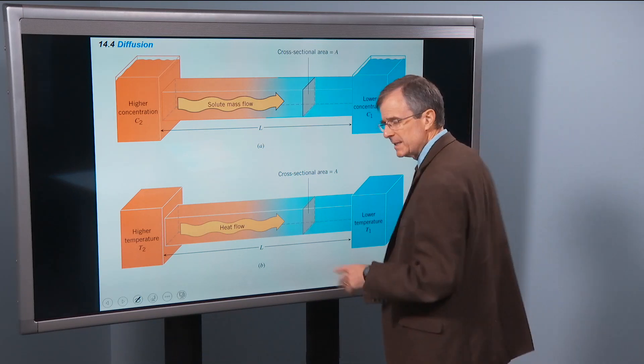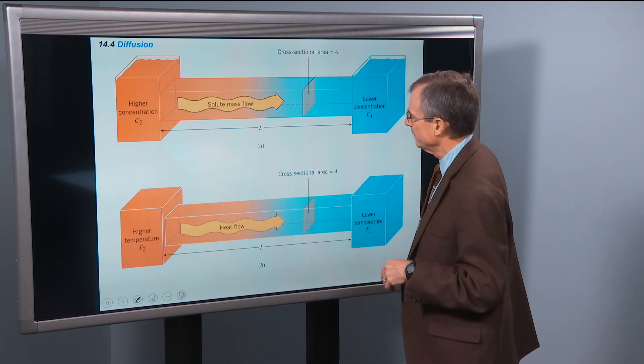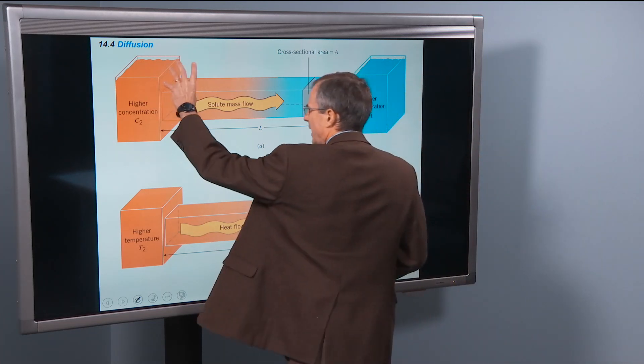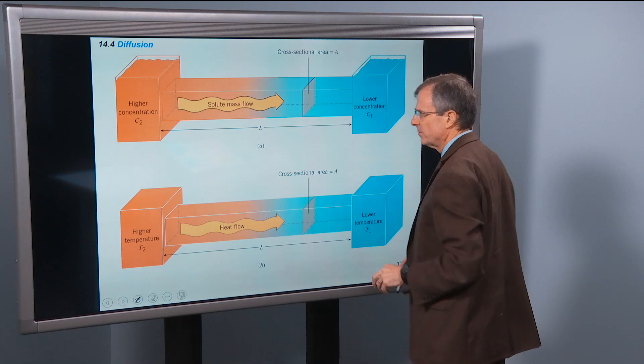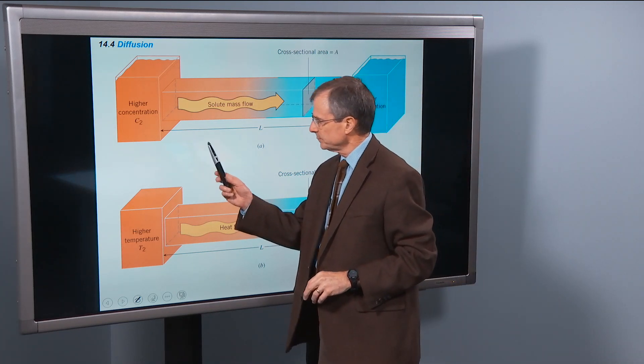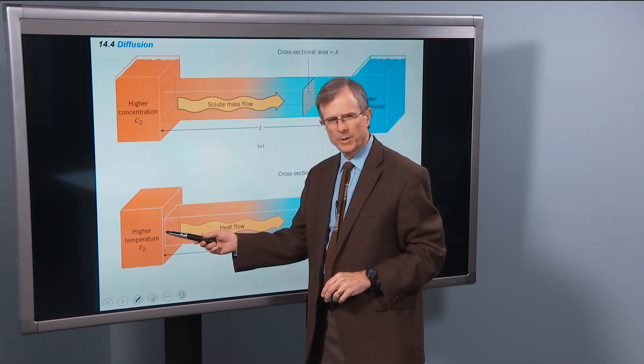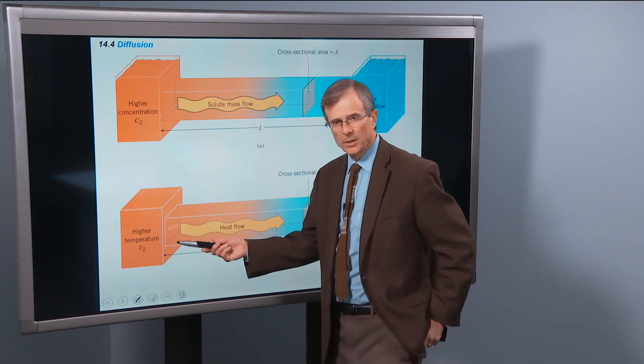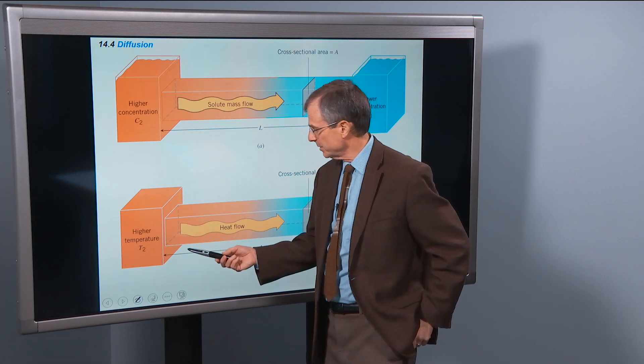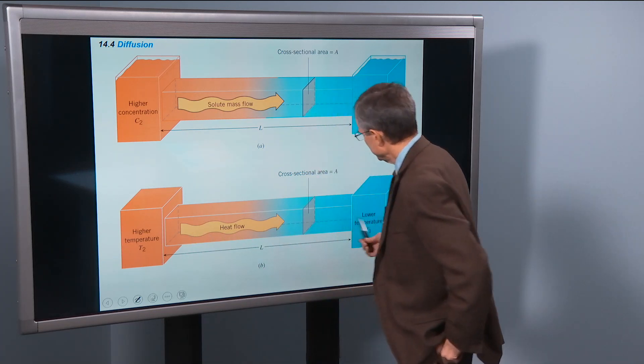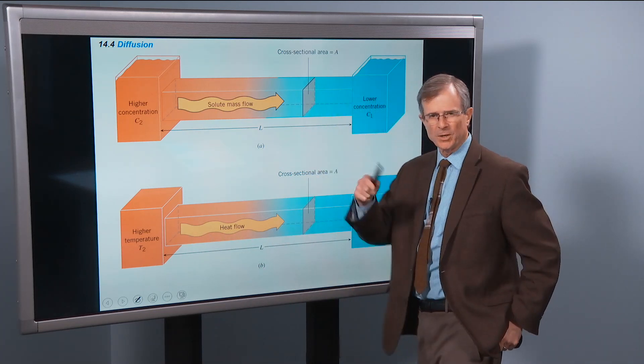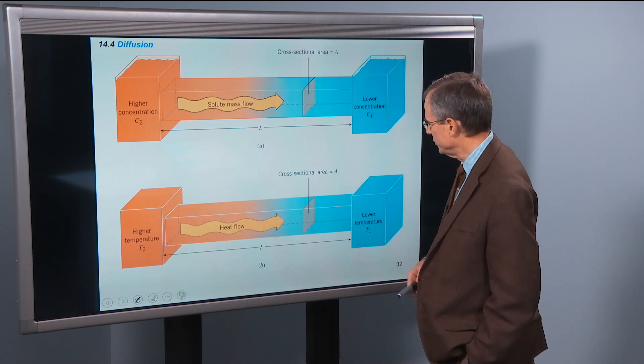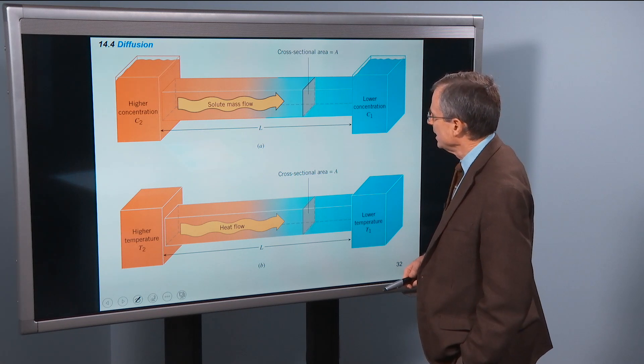So I was hinting at this before, that the diffusion from higher concentration region to a lower concentration region is very similar to the process of conduction of heat. And we worked out an equation for the conduction of heat, depending on the temperature difference. We related that to R factors and that sort of thing for insulation back a few chapters ago.